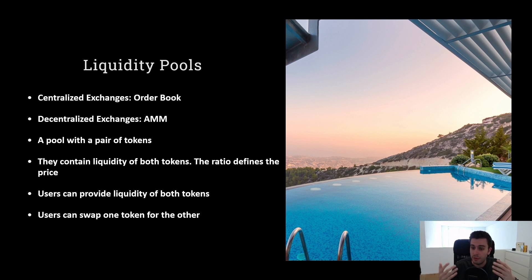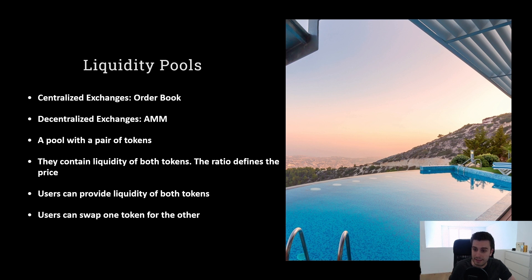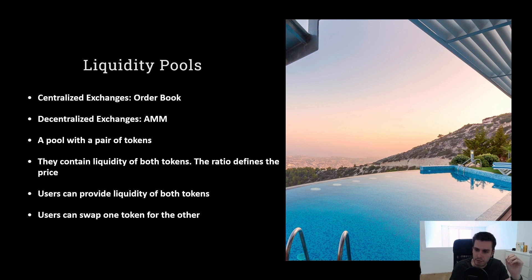Now we have two different users for such a liquidity pool. We have one user that makes the swap — he's kind of using the liquidity pool. And we have another user which provides liquidity. In such a contract, we need to have enough liquidity from both tokens to fulfill the swaps of the users. These are called liquidity providers. As they give tokens to the pool providing liquidity, they also get a reward. This reward is normally done through swapping fees — when somebody wants to swap, he gets a little bit less of the other token, and that difference goes to the liquidity provider as a reward for providing his tokens for this service.